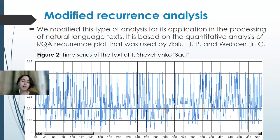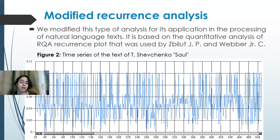Now we will talk about modified recurrence analysis. Recurrence analysis is used to study time series and processes. We modified this analysis for application in processing natural language texts, based on the quantitative analysis of the RQA recurrence plot used by Zbilout and Weber. The text is transformed into a time series, where the value of each point is the occurrence frequency of the n-gram or character. The resulting time series is characteristic exclusively for that text and allows further research based on this data.